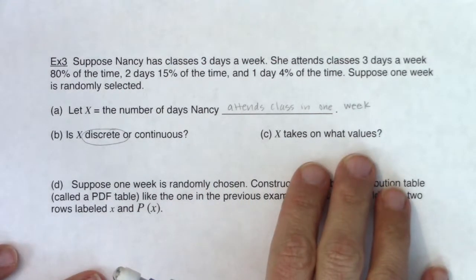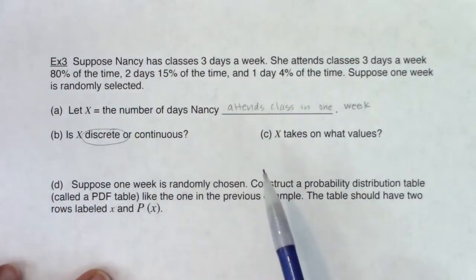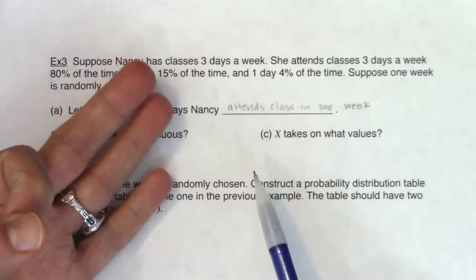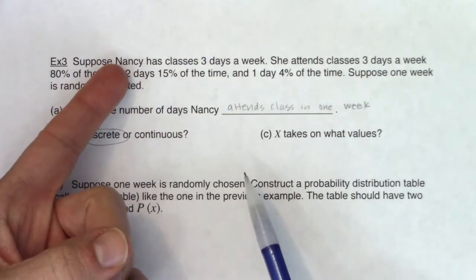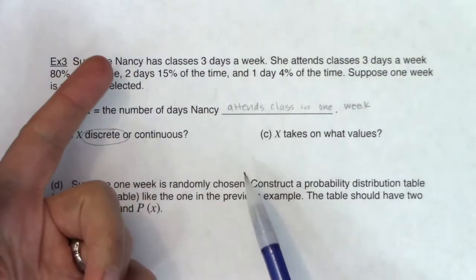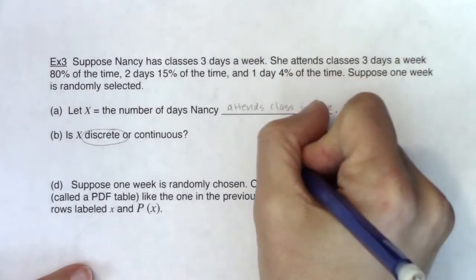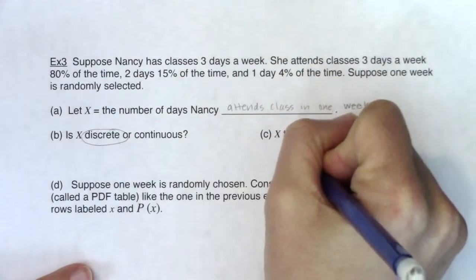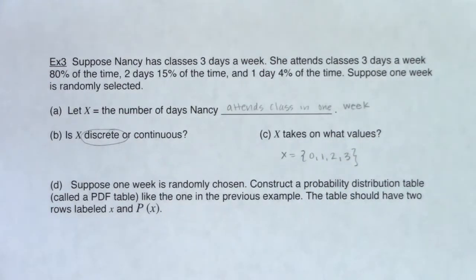X takes on what values? What's the sample space? Well, imagine you had class three days a week. Let's say you had a Monday, Wednesday, Friday class. You could show up all three days. You could show up two out of those three days. You could show up one out of those three days. Or you actually could show up none. You could show up none of those three days. So we have four values here: zero, one, two, or three.